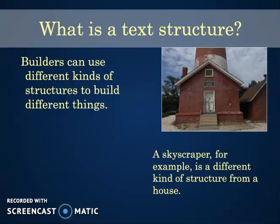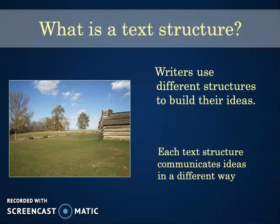Builders can use different kinds of structures to build different things. A skyscraper, for example, is a different kind of structure from a house. We know skyscrapers are very tall — they're called skyscrapers because it looks like they scraped the sky. So if your house looks like a skyscraper, that's something different. Most of our houses do not, so the structure of a skyscraper is different from a house, a school, or a church. Writers use different structures to build their ideas, and each text structure communicates ideas in a different way.